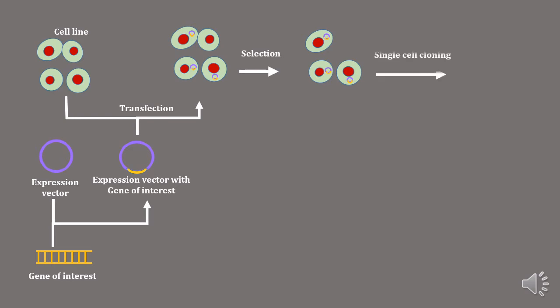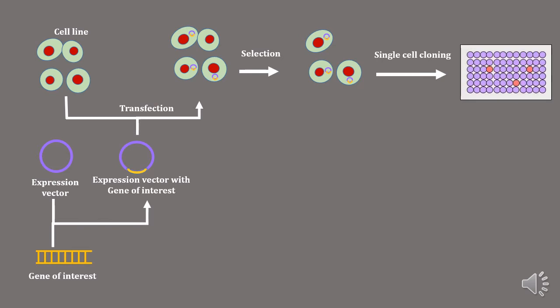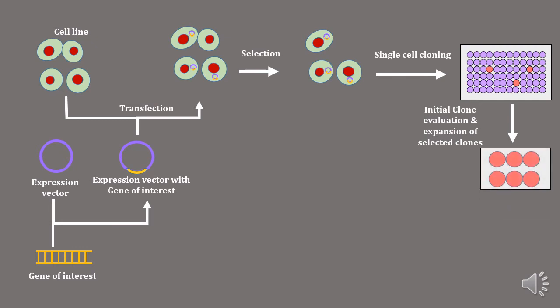The selected cells will then be processed for single cell cloning. The single cell clones will then be processed for initial clone evaluation and expansion of selected clones. We will move from a 96 well plate to a 6 well plate, and then we will again go through the process of clone evaluation and expansion.